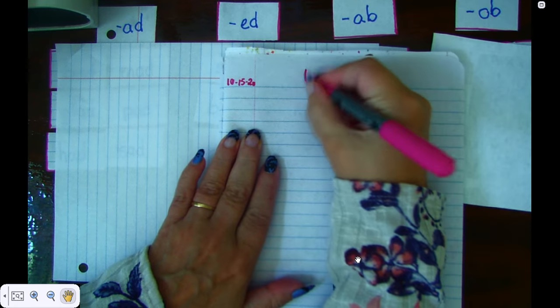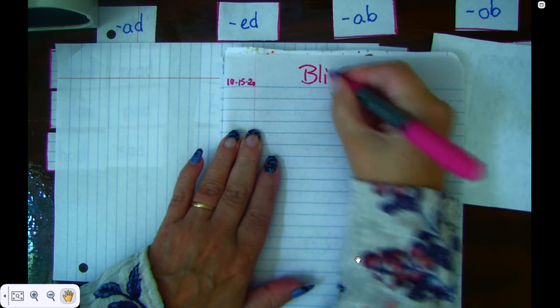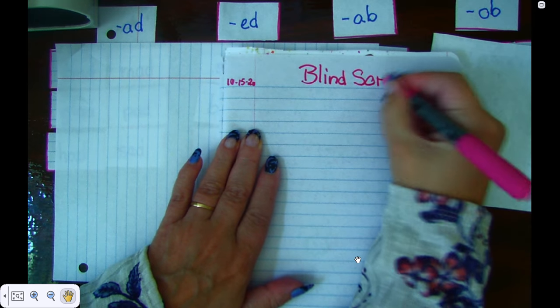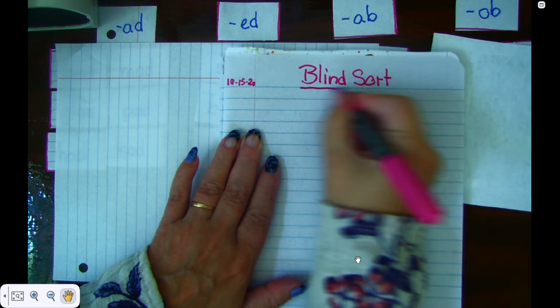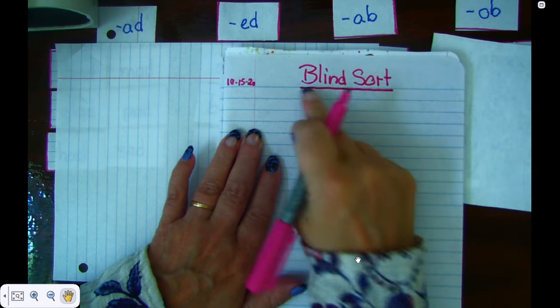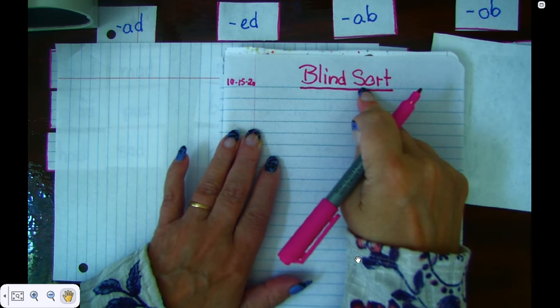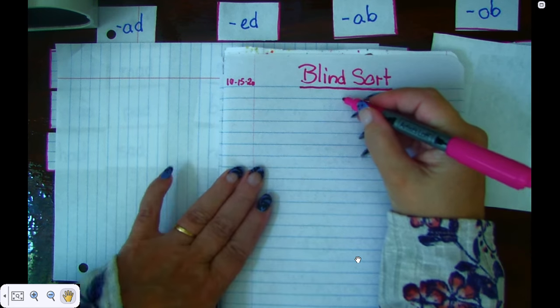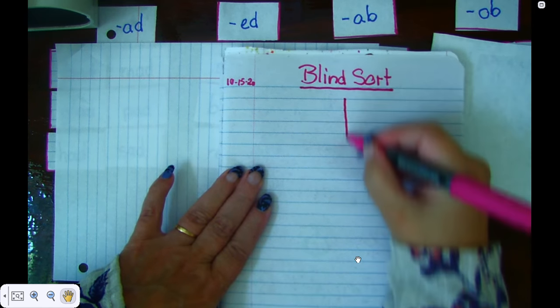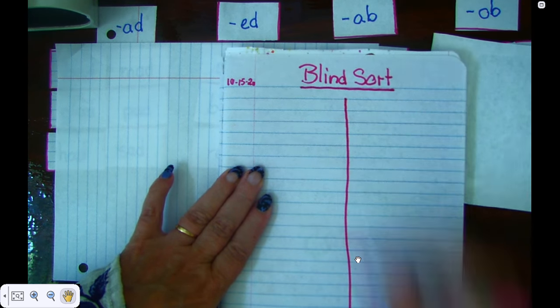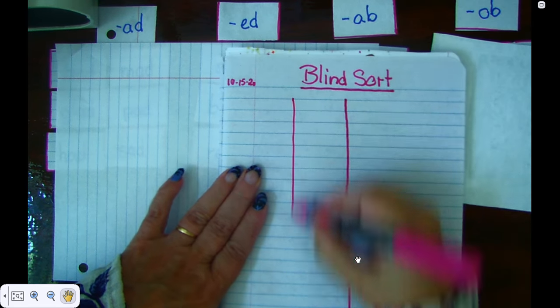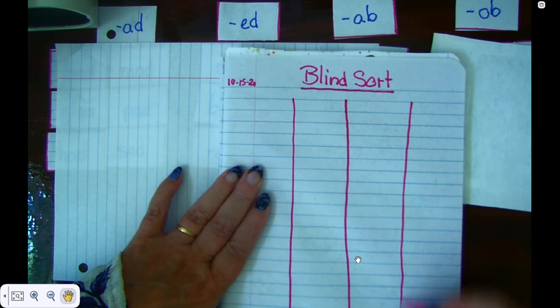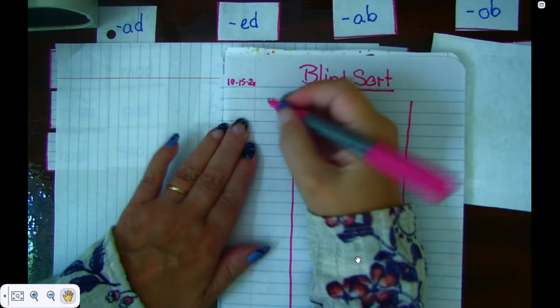And today we're doing the blind sort. And I know this is a title, so I underline it and I check. Yes, I have capital letters for each word. So I'm good to go. I also know I have four categories. So I draw a line down the middle, a line on this side, a line on that side in the middle, and there's my four columns.